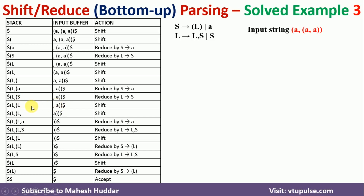Now looking at the stack content — (L(L — we cannot apply any rule, so we shift the next comma, then shift the next token A. Once A is on the stack, we reduce A to S. Now we have L,S on the stack. Rather than reducing S to L, which would give us L,L with no applicable rule, the largest match is L,S, which gets reduced to L by the rule L → L,S.